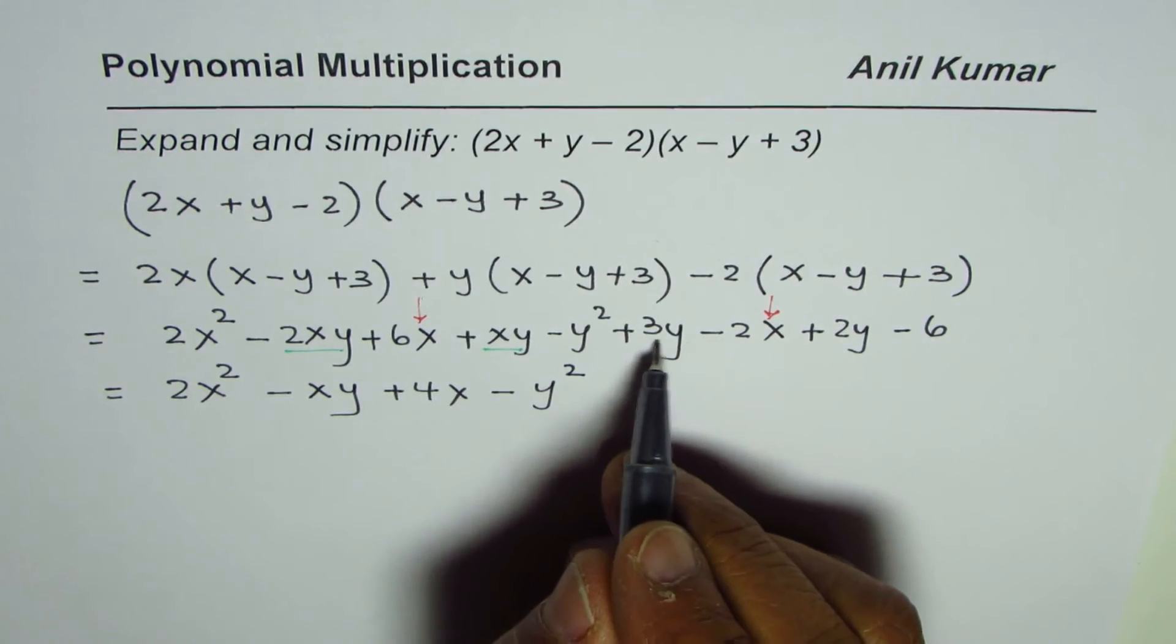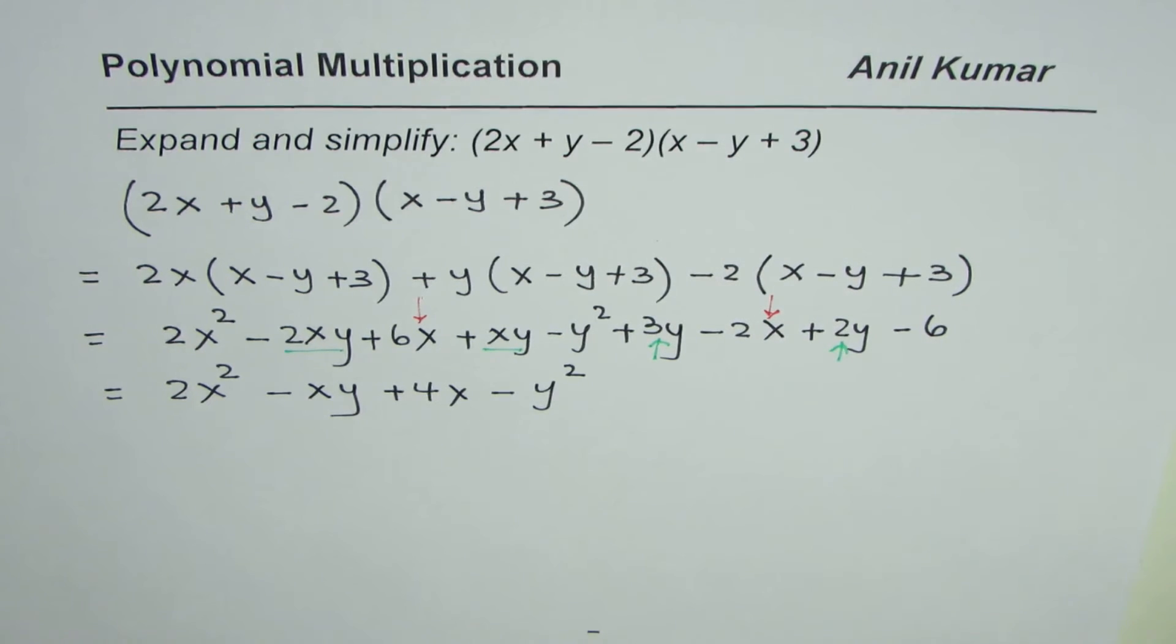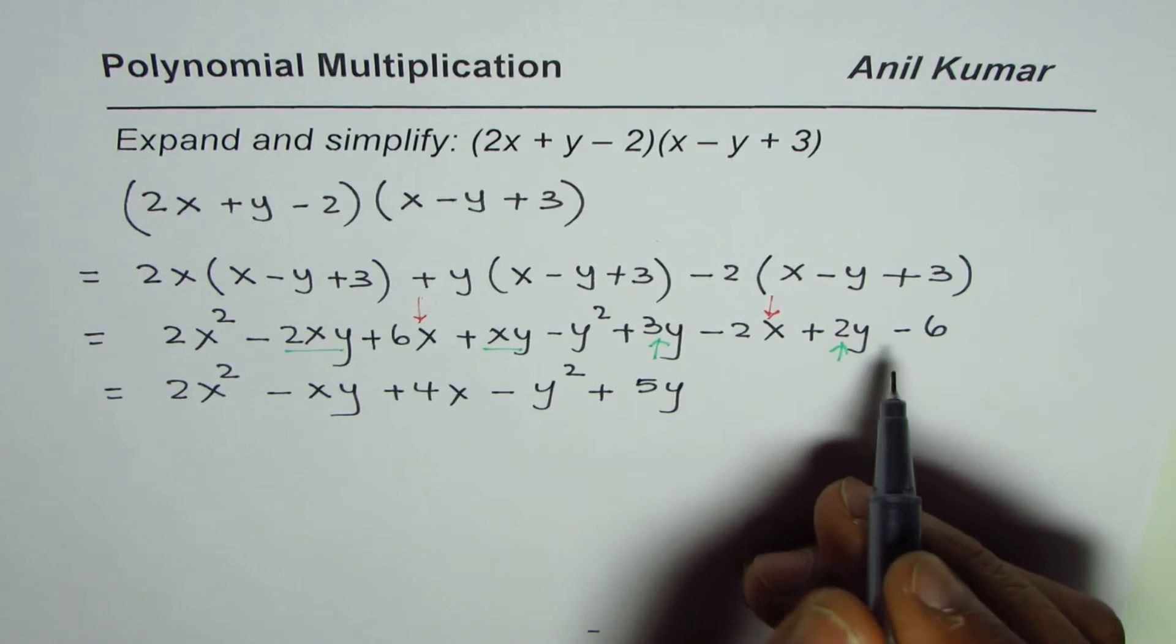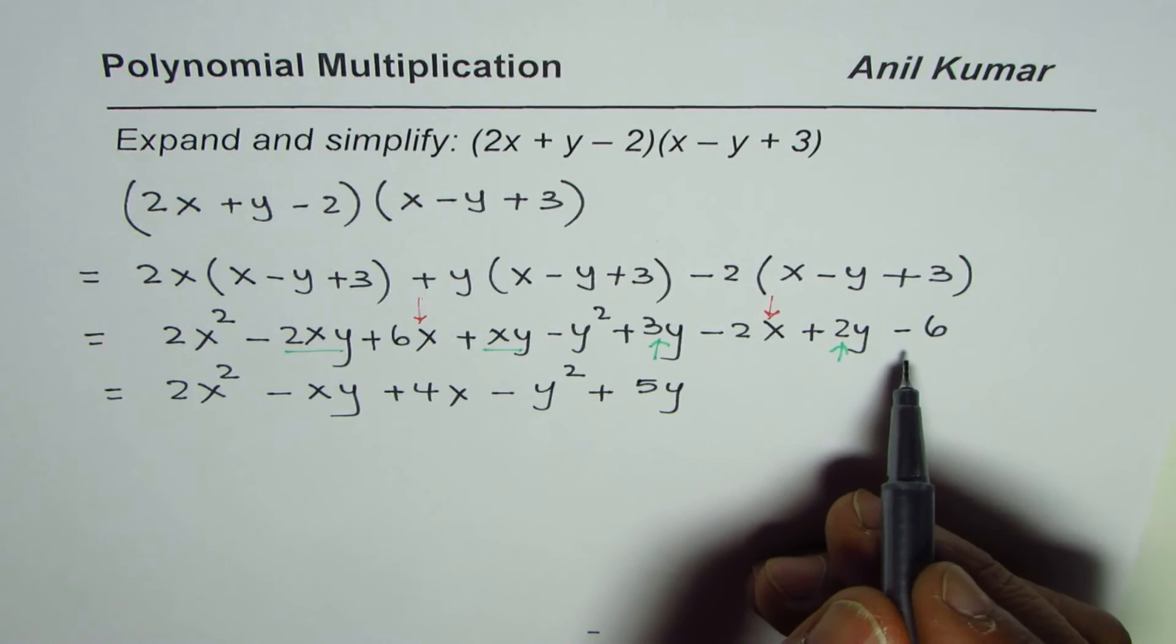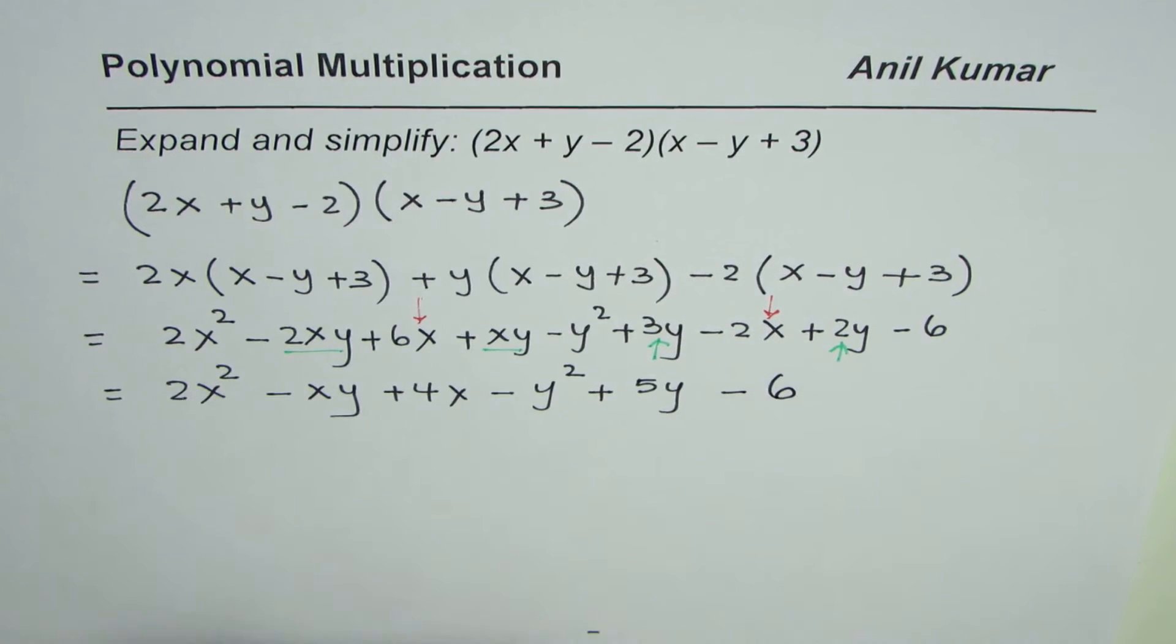How about y terms? We have two y terms: 3y and 2y. Adding them gives us 5y. Now the constants. The only constant is -6.